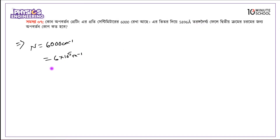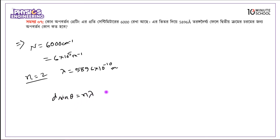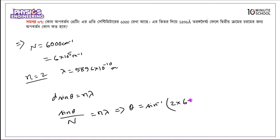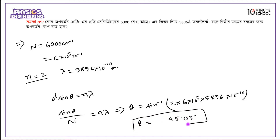For chromatic diffraction: the wavelength is 5896 into 10 to the power minus 10 meters. Using the grating equation sine theta equals n times lambda, with n equals 1 and lambda equals 5896 into 10 to the minus 10, and the grating having 2 into 10 to the power 5 lines per meter: theta equals sine inverse of (2 into 10^5 times 5896 into 10^-10), giving theta equals 45.03 degrees.